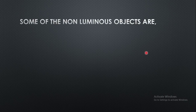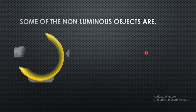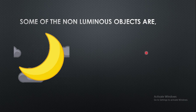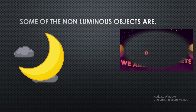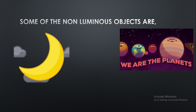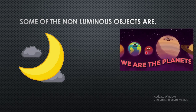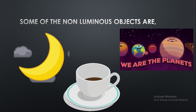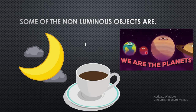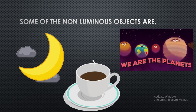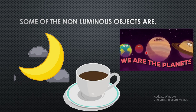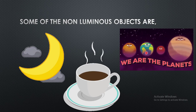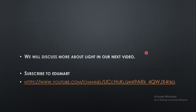Some non-luminous objects are the Moon, the planets, and the things around us such as pencils, books, cups, and clothes. These objects do not have the ability to emit light. We will discuss more about light in our next video, so subscribe to our Edumart channel.